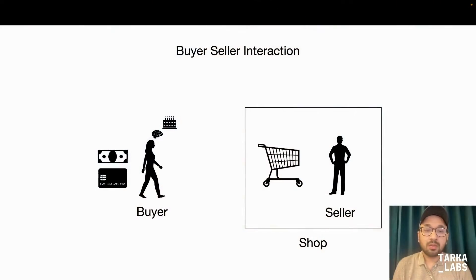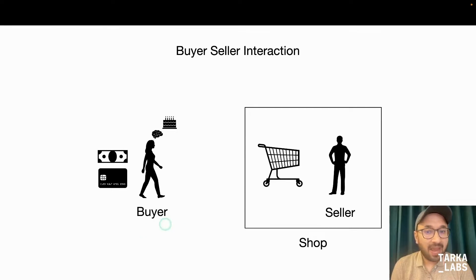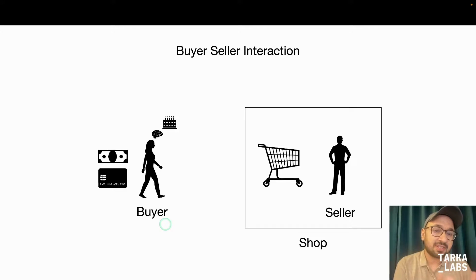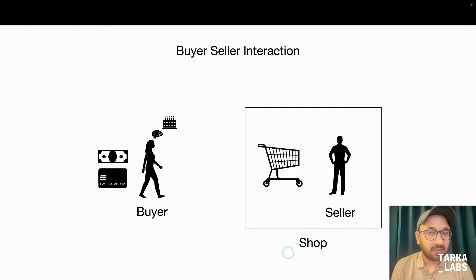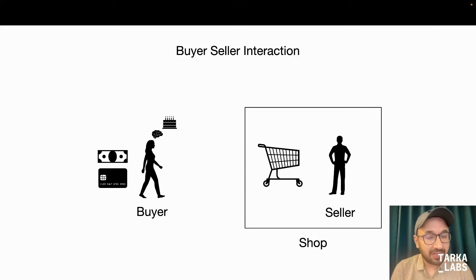To understand all this, let's go a step back and look at how a basic commerce transaction works in the real non-tech world. Let's look at a basic buyer-seller interaction. The buyer has money and wants to buy a cake. The buyer knows where the shop is and can talk in the language the seller understands. The buyer goes to the shop, asks the seller for the cake, they agree on a price, the buyer pays and takes the product home.